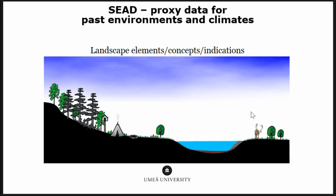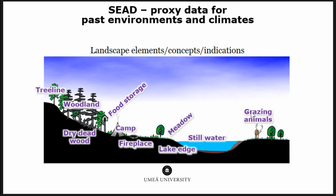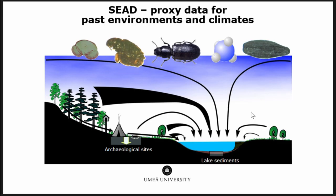Going back to the data in SEED: when you look at a landscape, you can divide it into different landscape elements — identifying areas with a lot of dead wood, areas with still water, areas affected by grazing, areas affected by people. This is essentially a way of classifying the landscape and environment to make it easier to analyze and work with. These landscape elements come with their own indicators — different proxies like organisms such as insects and plants, but also the chemical and physical properties of soils and sediments.